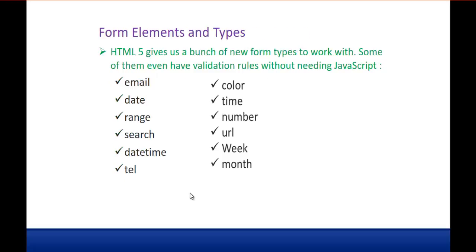Coming to the next feature: form elements and types. HTML5 gives us a bunch of new form types to work with. We have an input element with a type attribute that takes values like text, radio, checkbox, submit, or button. But HTML5 has given us new form types: email, date, range, search, daytime, telephone, color, time, number, URL, week, and month. Some of them also do validation, so we don't need to write JavaScript to do form validation. These are the new features for form elements and types in HTML5.